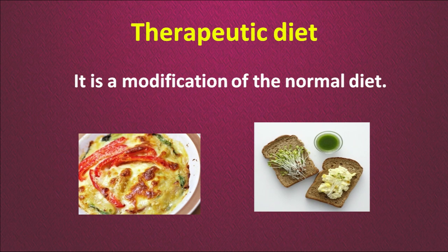Therapeutic diet is a modification of the normal diet. In these two pictures you can see bread with a very rich coating, but when the same item is given with certain modifications — such as sprouts with a small spread — it becomes a therapeutic diet. So the same normal diet can be modified easily into a therapeutic diet.